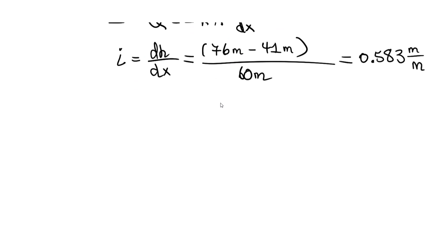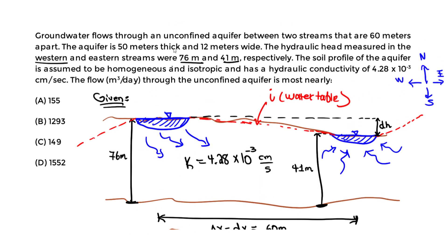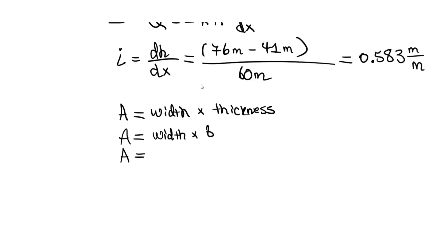Next, find the cross-sectional area. The area is always width times thickness (B value). Width is 12 meters and thickness is 50 meters, so A = 12 × 50 = 600 m².